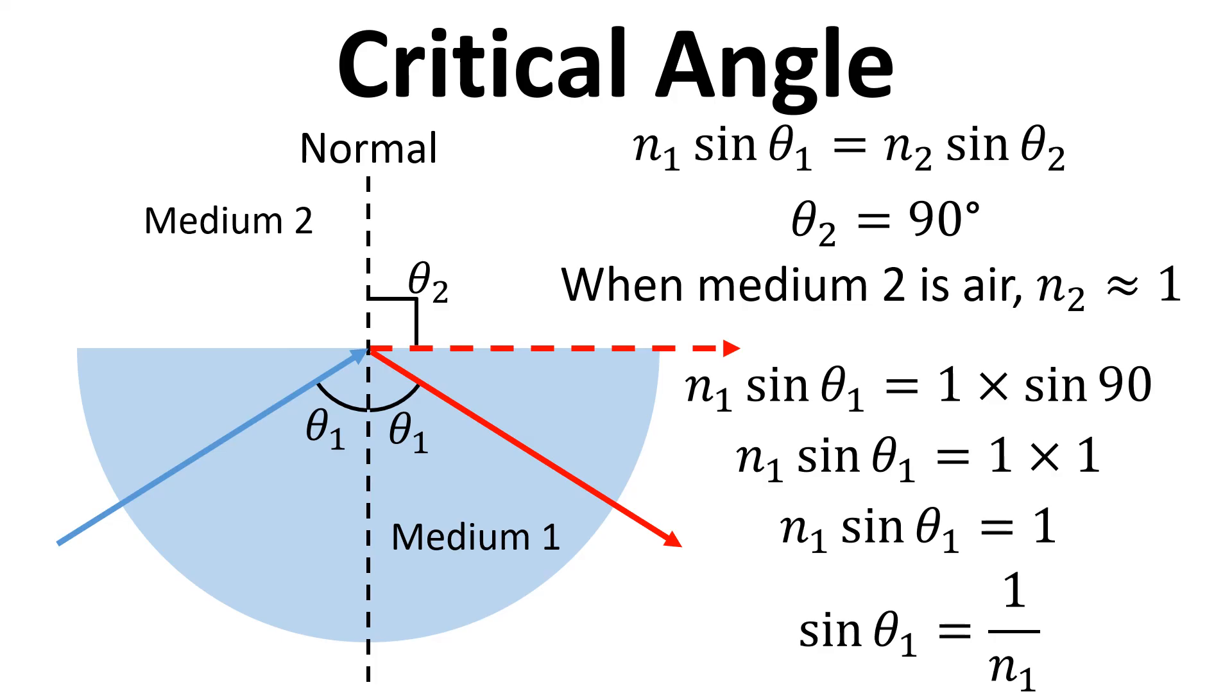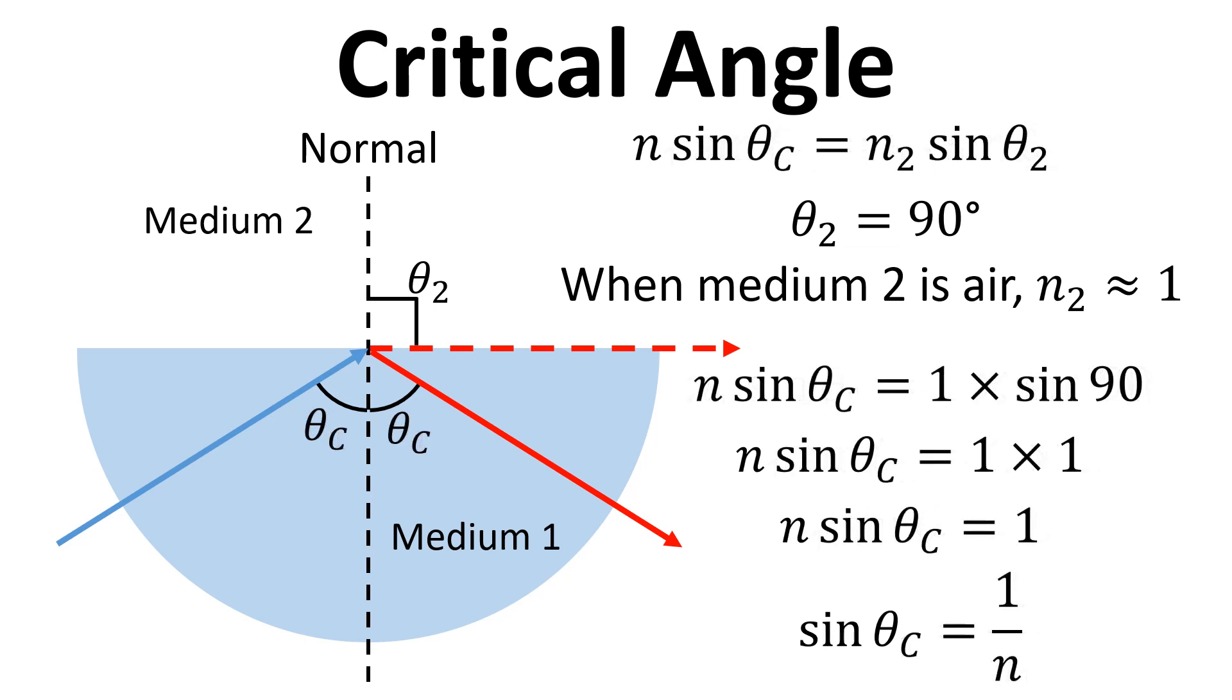The angle of incidence where we get this refracted ray being refracted at 90 degrees is the critical angle. We'll just change all the subscripts from 1 to C because at this point we're at the critical angle. So θ_C is referred to as the critical angle.